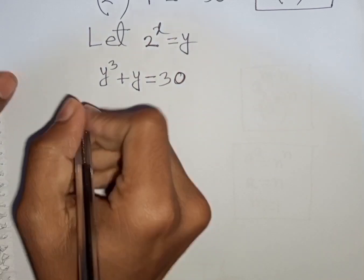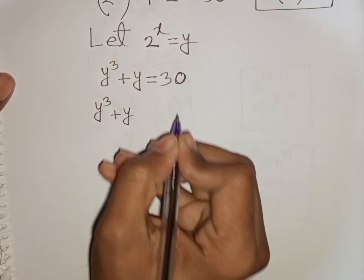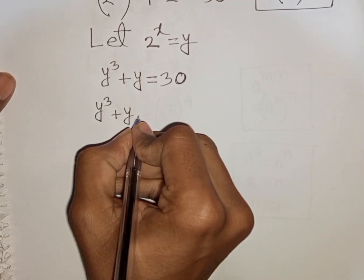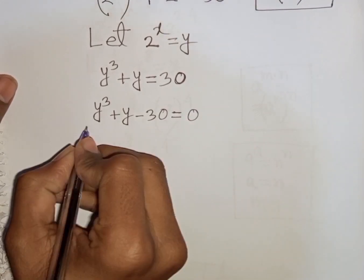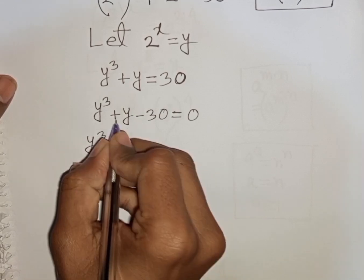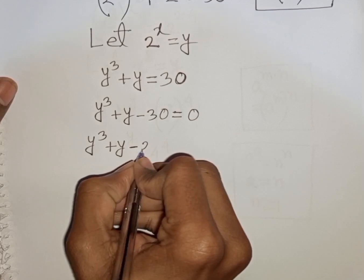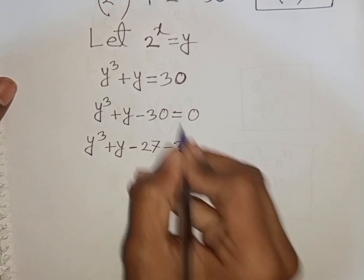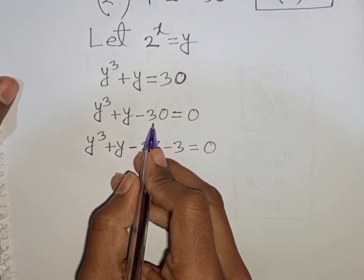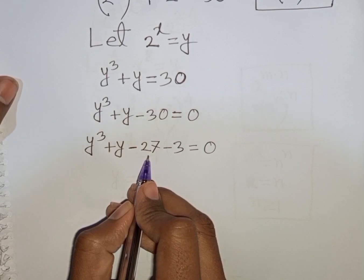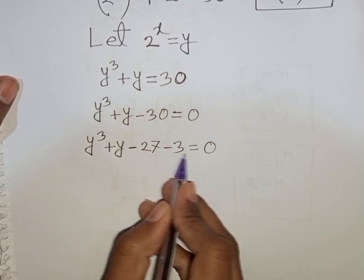Now I can write here y cubed plus y, then bring minus 30 to the left side, so it will be y cubed plus y minus 30 equals 0. This can be written as minus 27 minus 3 equals 0. The nearest cubic number to 30 is 27, so minus 30 can be written as minus 27 minus 3.